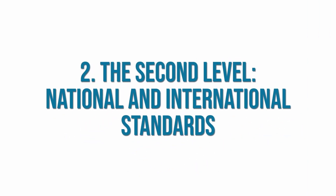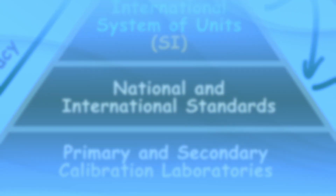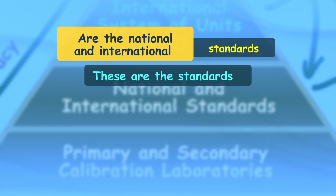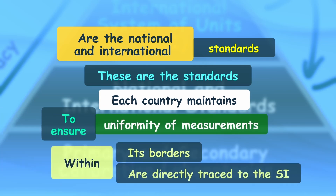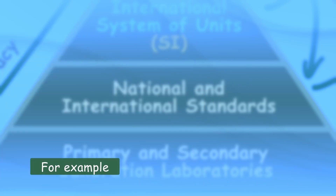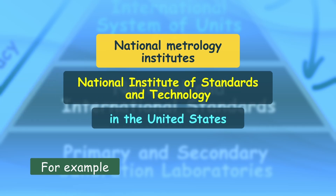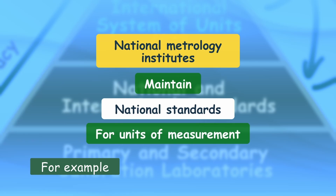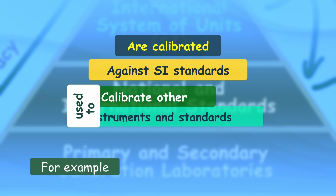Just below the International System of Units in the pyramid are the national and international standards. These are the standards each country maintains to ensure uniformity of measurements within its borders, directly traced to the SI. For example, national metrology institutes such as the National Institute of Metrology Quality and Technology in Brazil or the National Institute of Standards and Technology in the United States maintain national standards calibrated against SI standards.